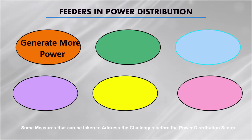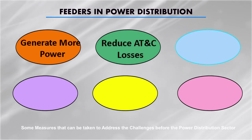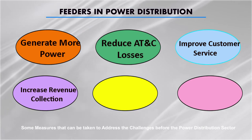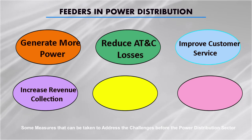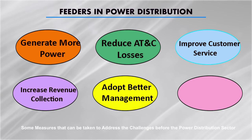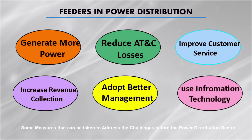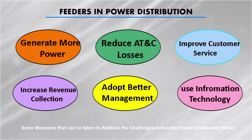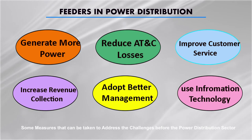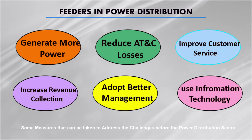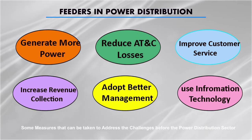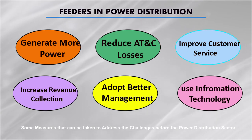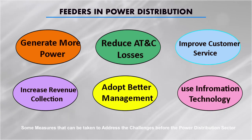Some measures needed include reduction of aggregate technical and commercial losses, improvement of customer service, increase in revenue collections, and addressing theft and power pilferage which are common particularly in rural areas. Better management in the distribution sector and use of information technology are also necessary. By using these technologies you can make an efficient power distribution system and address the many challenges and problems.